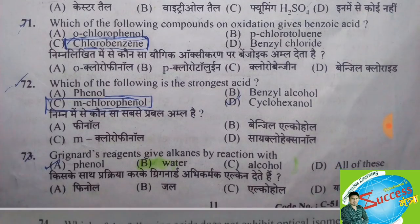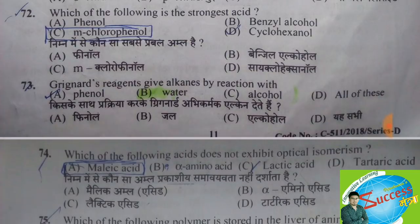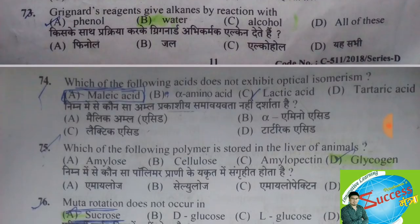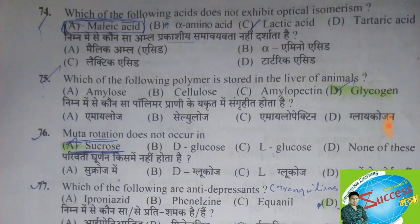Which of the following is the strongest acid? The correct answer is option C, meta-chlorophenol. Grignard reagent gives alkenes while reacting with — the correct answer is option B, water. Which of the following acid does not exhibit optical isomerism? The correct answer is option A, malic acid.